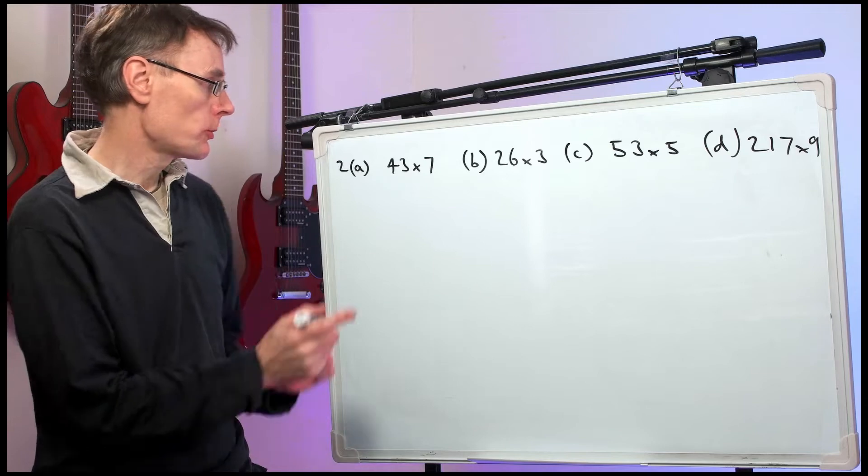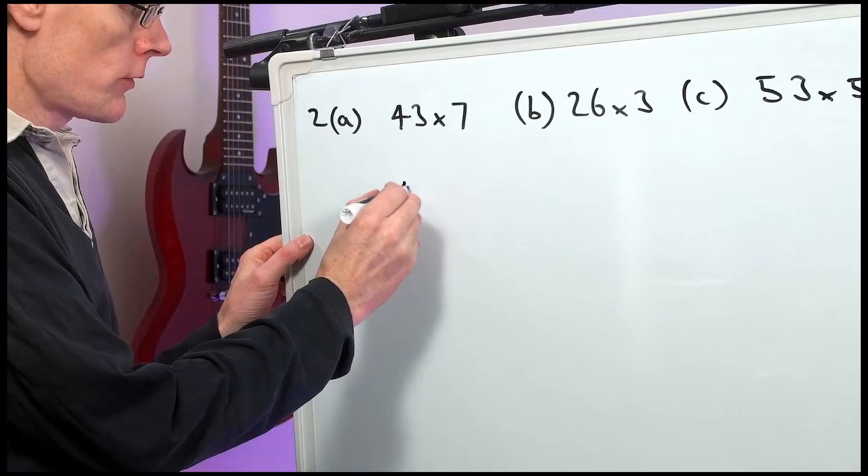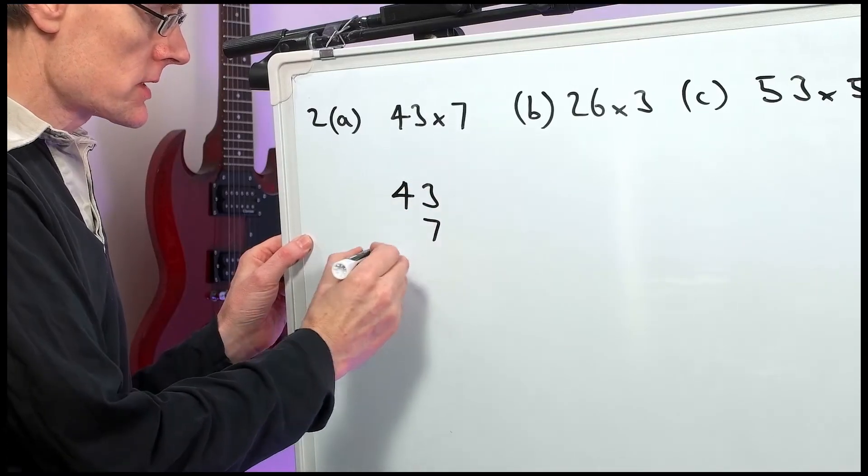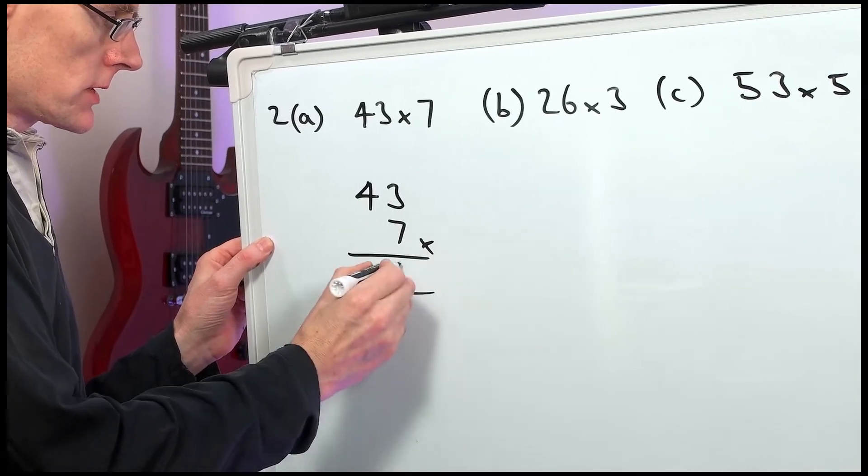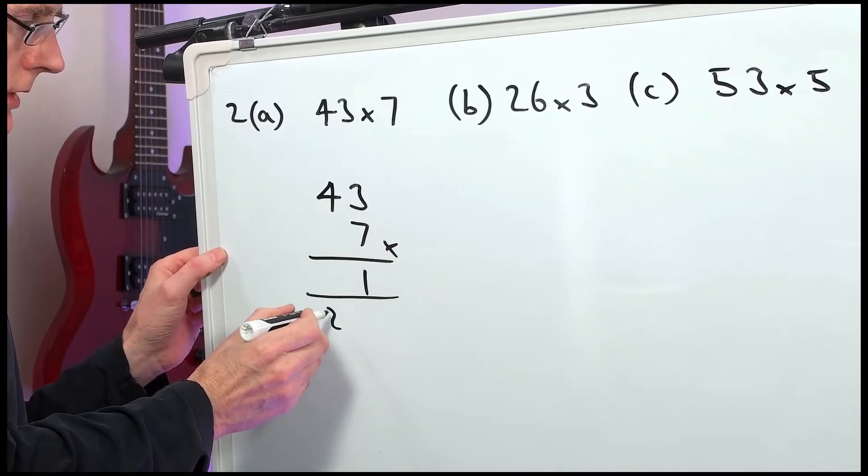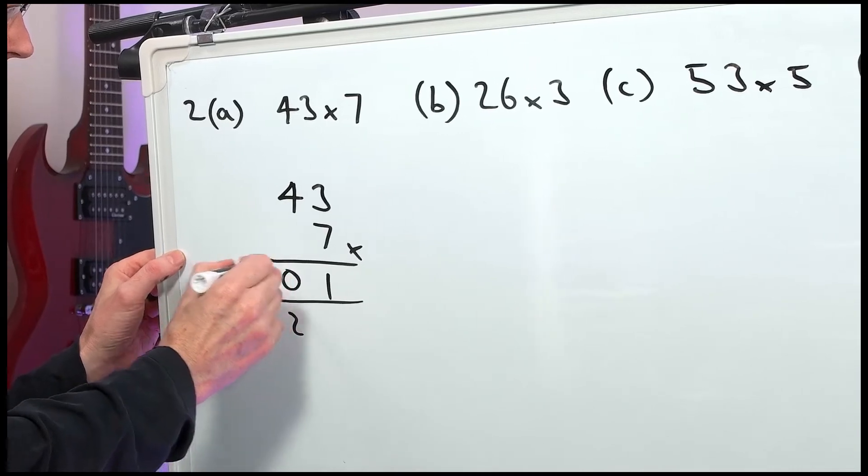Right, question number 2. We have to do some short multiplication. So part A, 43 times 7. So 3 sevens are 21. 7 fours are 28. 29, 30. 301.